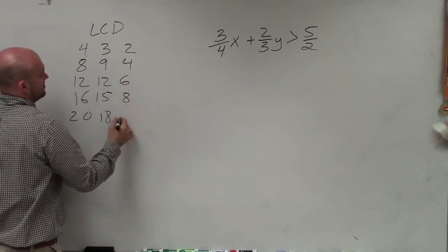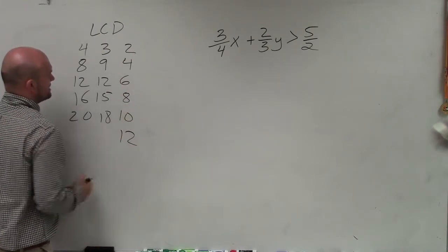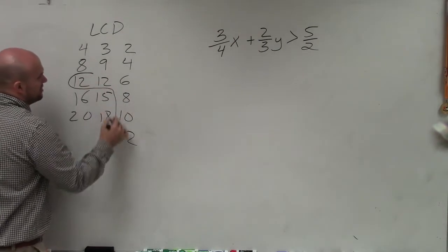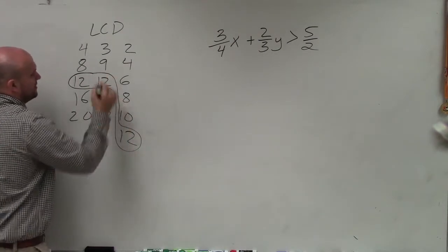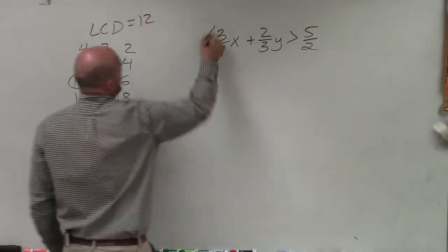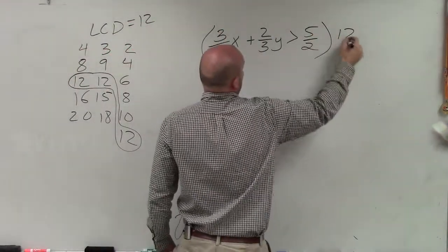And once you do this a couple times, what you'll notice is you can start doing this kind of stuff in your head. But the smallest number that they both share is going to be 12. So what I'm going to do is I'm going to multiply my whole equation by 12.